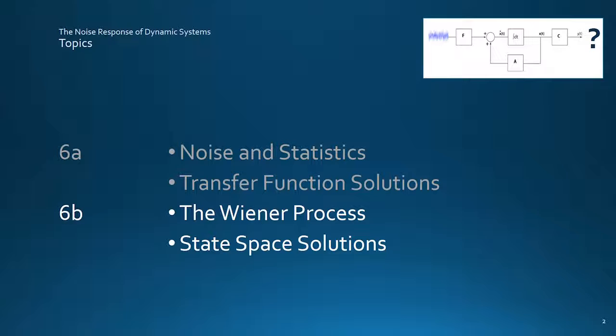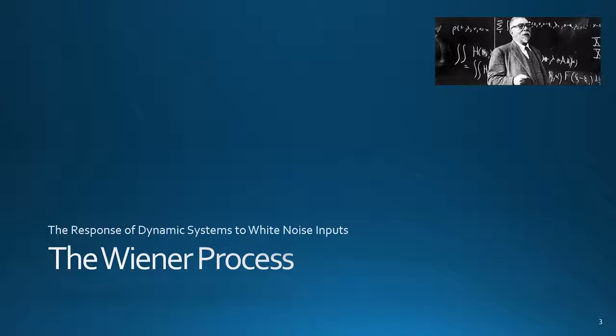The first half introduced transfer function methods for finding the statistics describing noisy system behavior. This half is about the state space approach by way of the Wiener process. This special stochastic process gives a workaround to some of the mathematical difficulties involved with white noise.